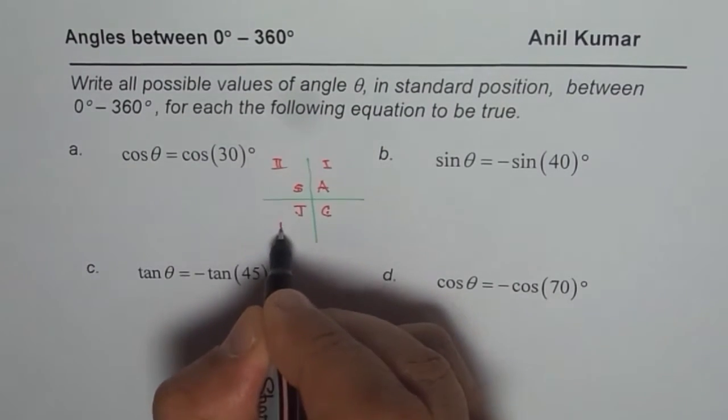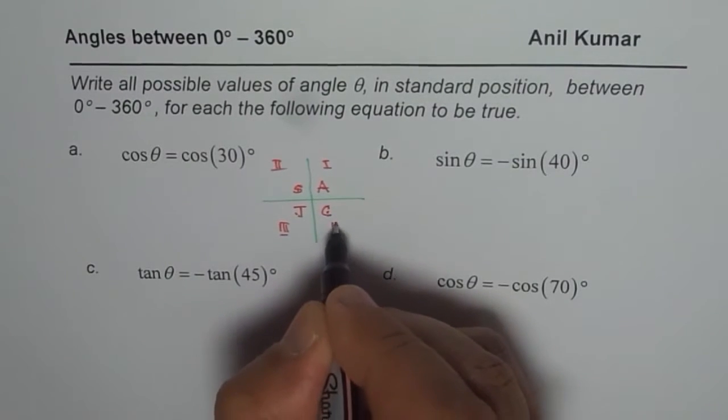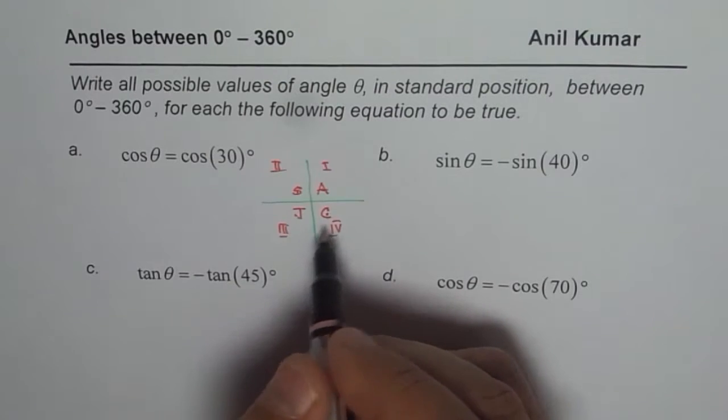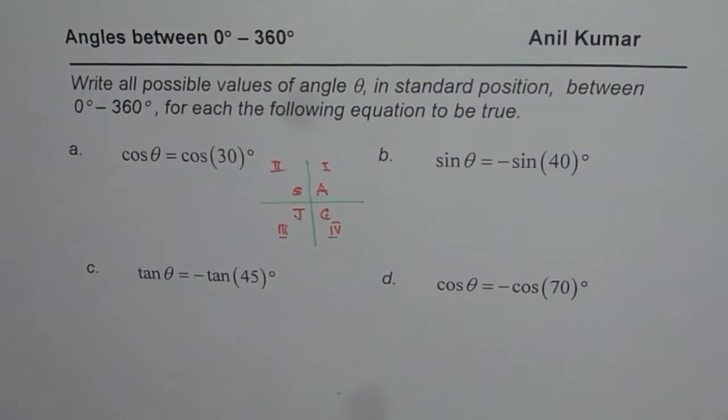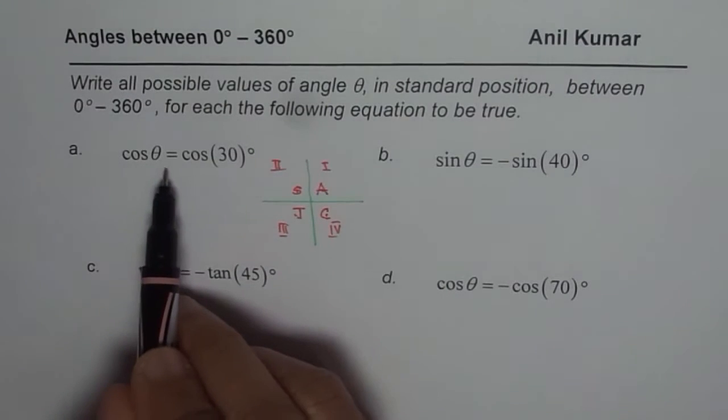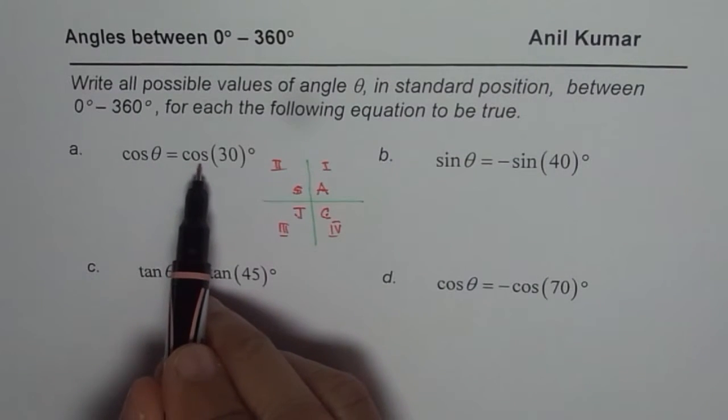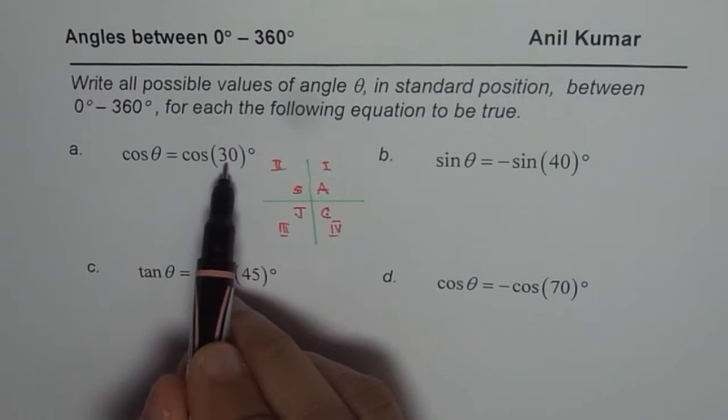Tan is positive in quadrant 3, cosine in 4. So that is the caste rule or all students take calculus rule, which helps you to figure out this particular solution. So, when we say cos theta equals to cos of 30, what could theta be? It is a positive value because angle 30 is in positive.